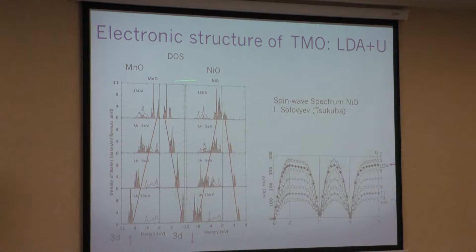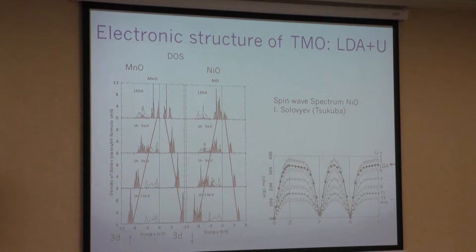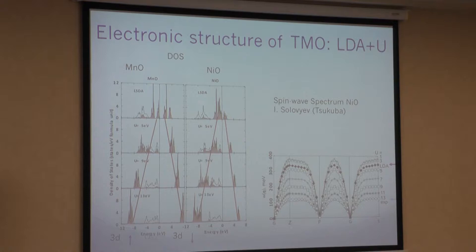In first glance everything looks perfect, but if you look at the gap, it's an order of magnitude smaller than experiment. The gap in nickel oxide is about 4 electron volts, but in the LDA calculation you see a very small gap — about 0.2 eV at the Fermi level. We then do a computer experiment: we just increase the U parameter. As soon as you increase U, the occupied part of the D-band goes down and the unoccupied part goes up — you have this Hubbard splitting of occupied and unoccupied states.